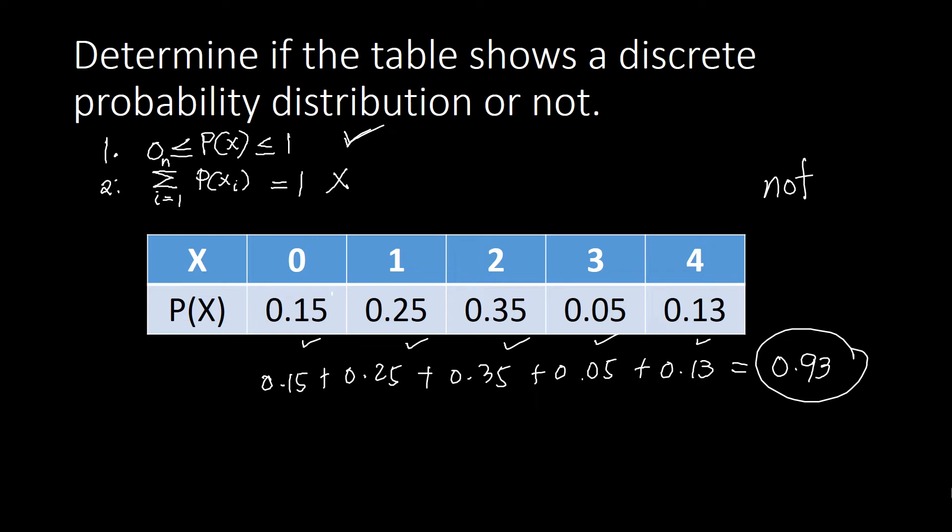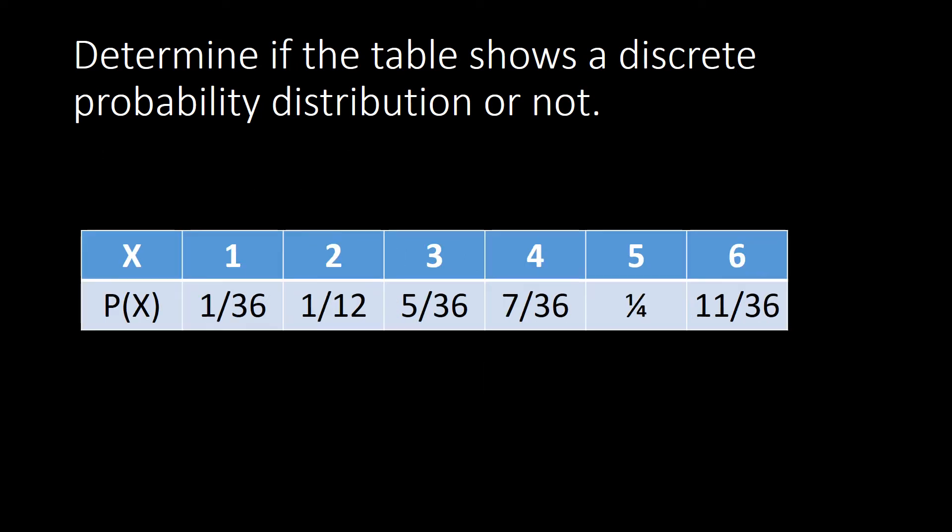Let's go to our second example. Second example, it says here we have 1/36, 1/12, 5/36, 7/36, 1/4, and 11/36. So that is why if you are going to check if this is really a probability distribution, you better check all the probabilities first.